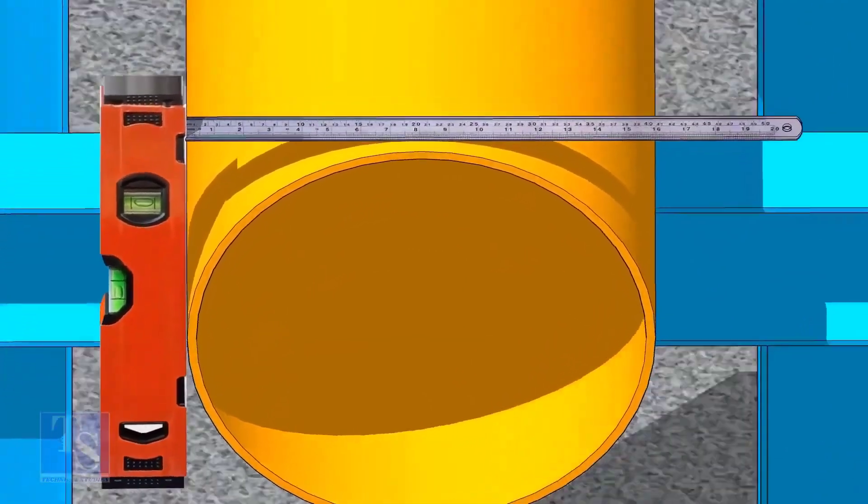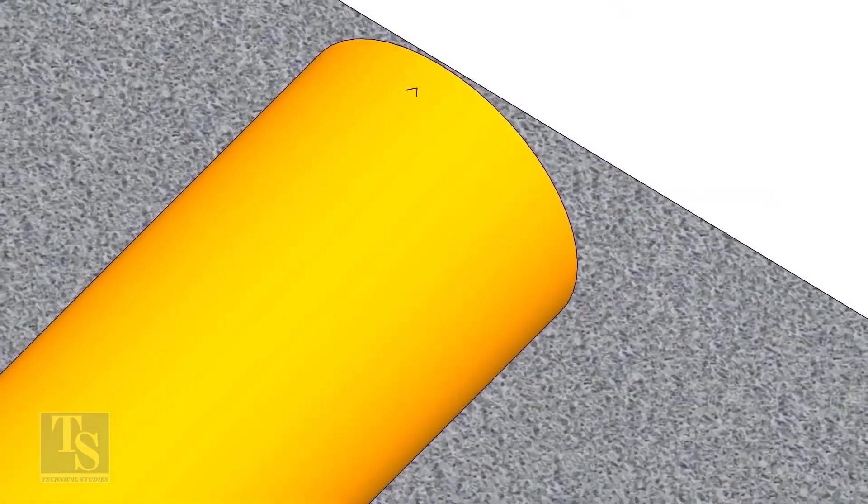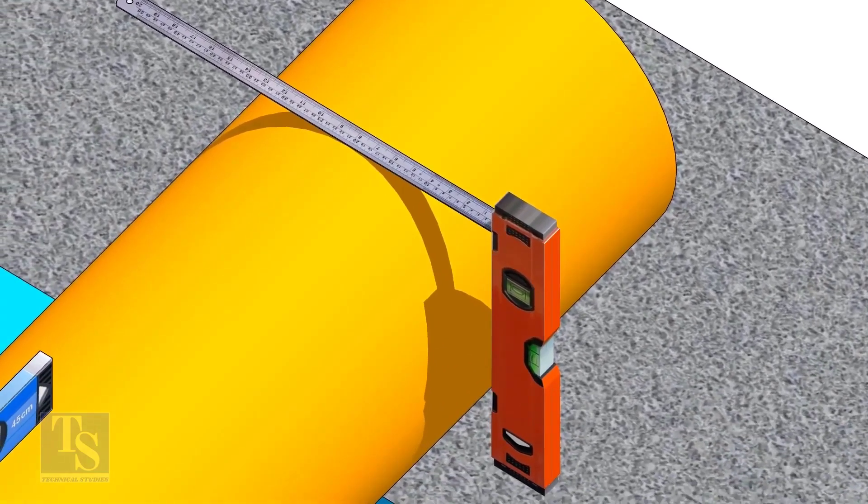Mark half OD at 300 mm apart. This pipe OD is 406 mm, so mark 203 mm from the vertical level bottle on the top of the pipe. And draw a line connecting these marks.